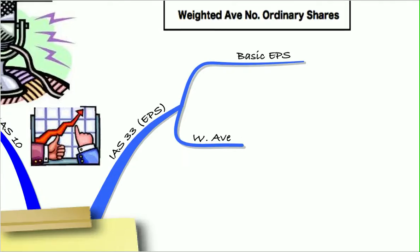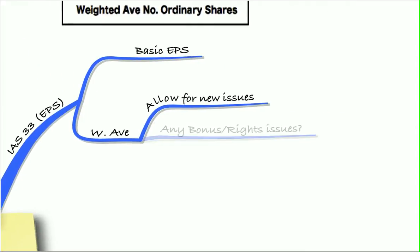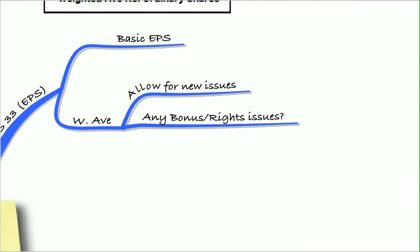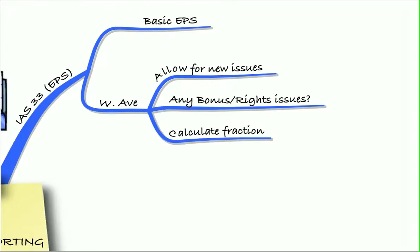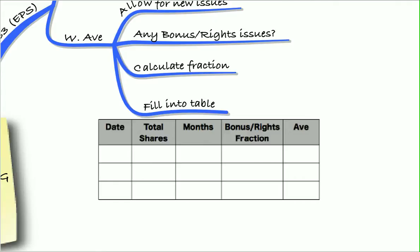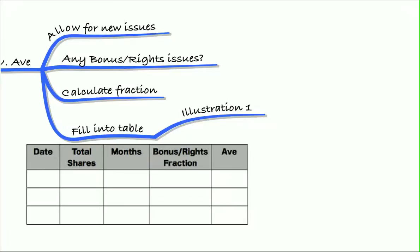The weighted average, remember, would need to allow for new share issues. We could have a bonus or a rights issue, and we needed to calculate a fraction if we had either of those. We filled it all into our table, and that gave us the weighted average of the number of shares. So we did that in illustration one.